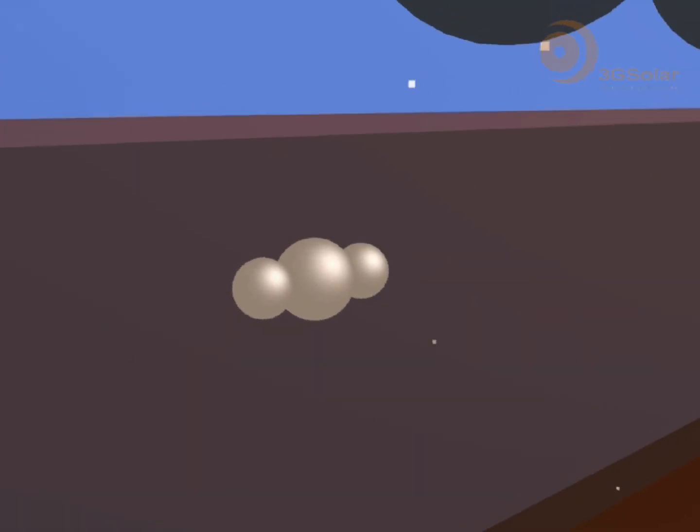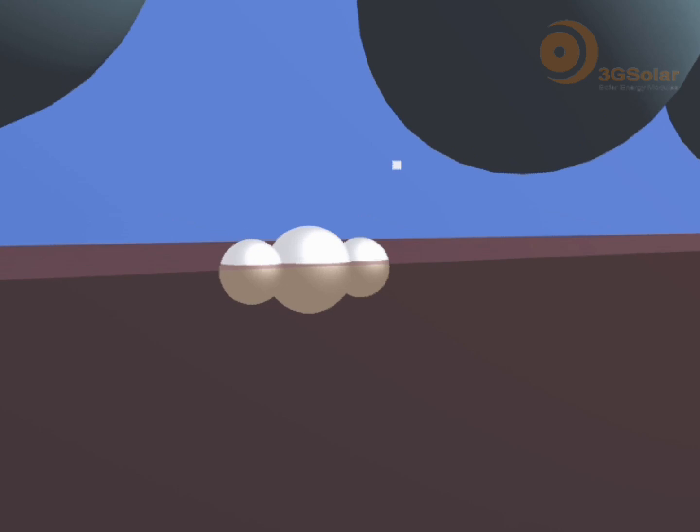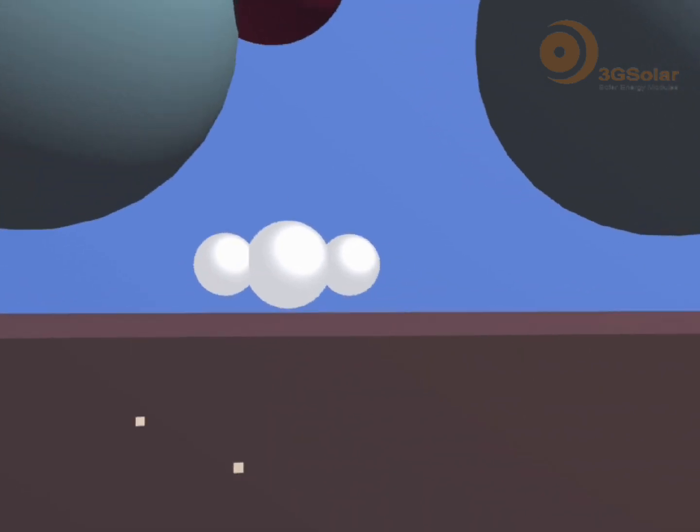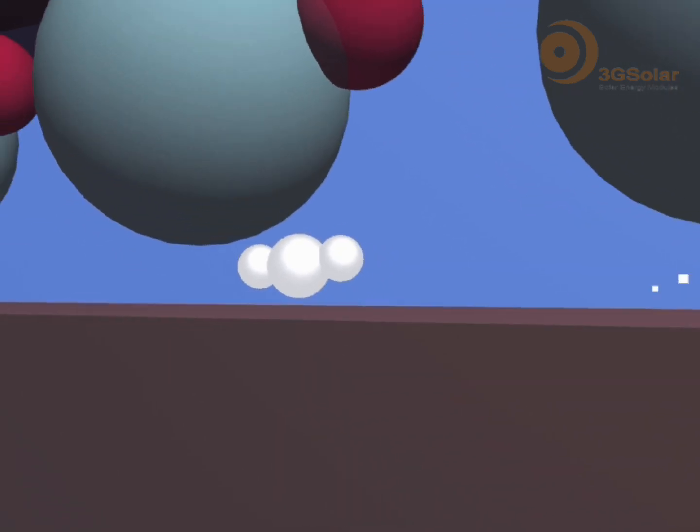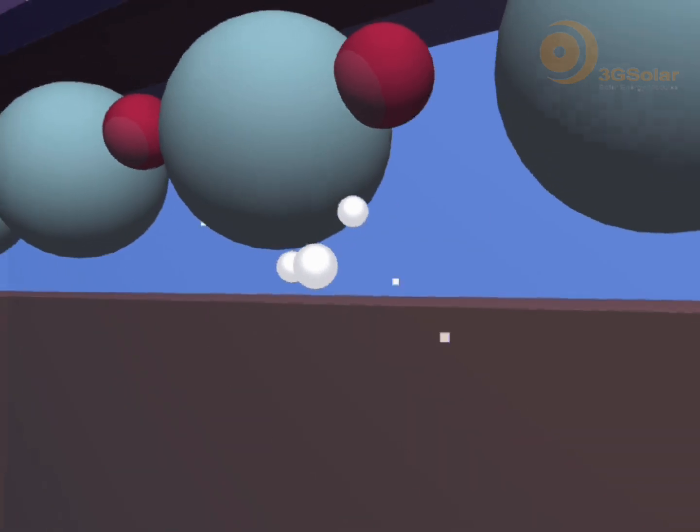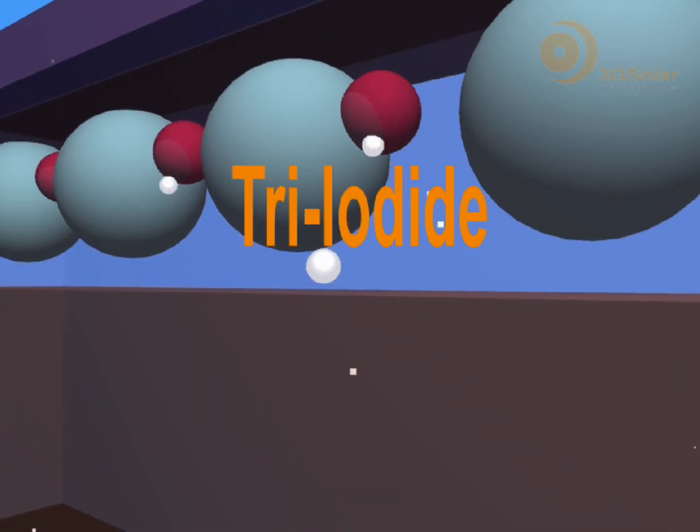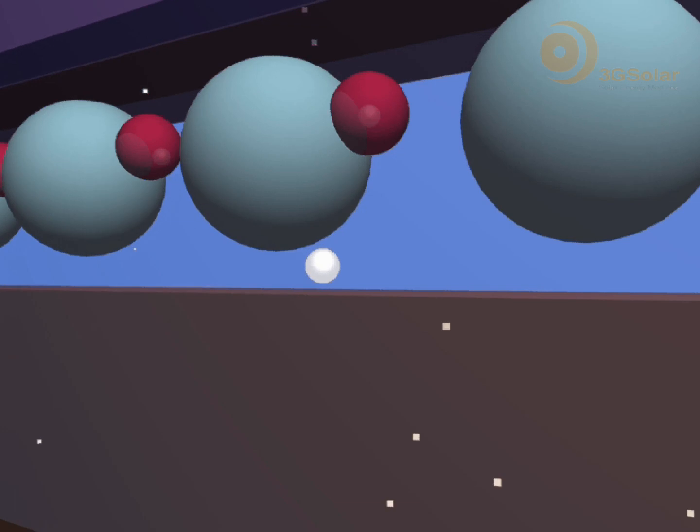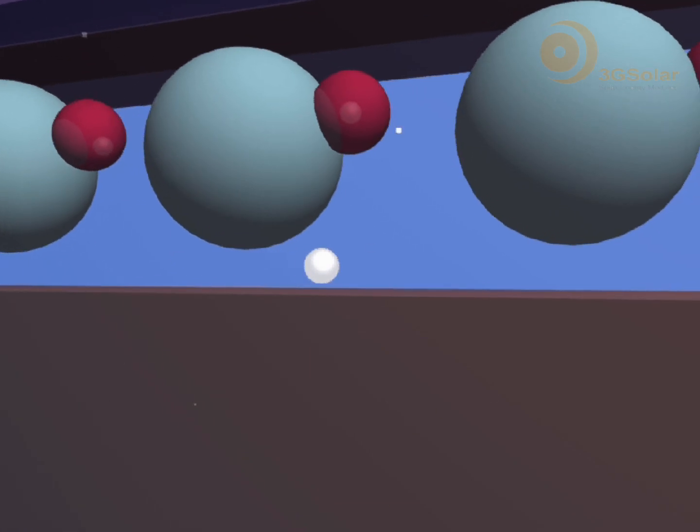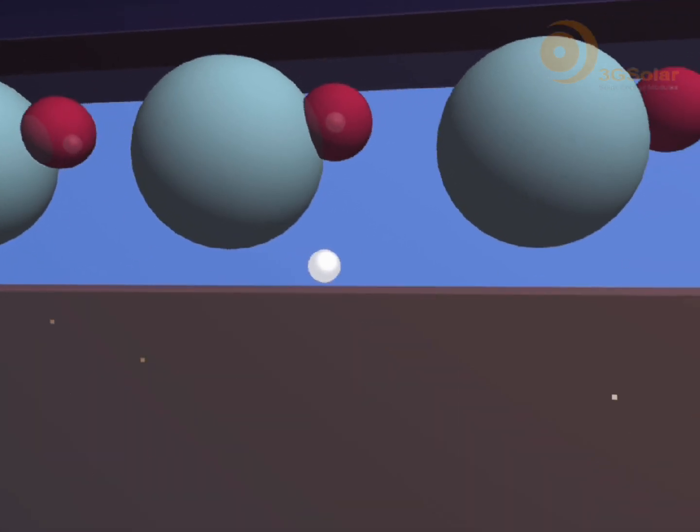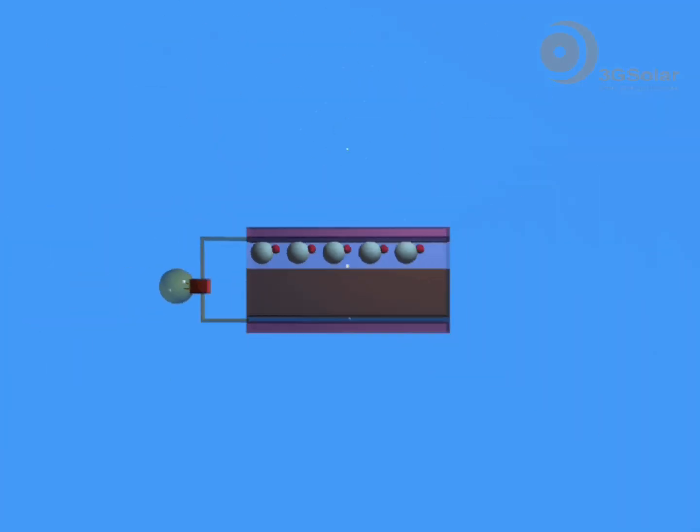The iodide ion makes its way towards the activated dye molecule and transfers an electron to the dye. The iodide ion reforms back to tri-iodide and the dye molecule reverts back to its previous unactivated state. The dye is now ready for the next photon from the sun.